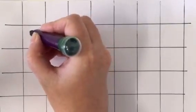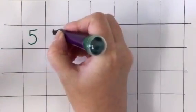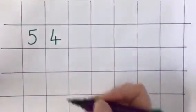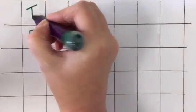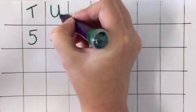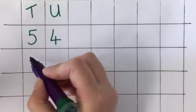we can write 54, which is made up of tens and units, and we're going to add 23.